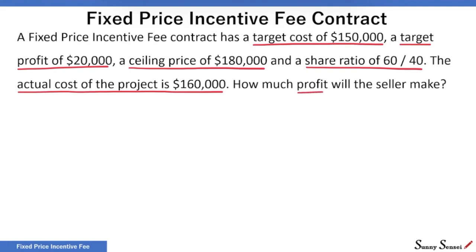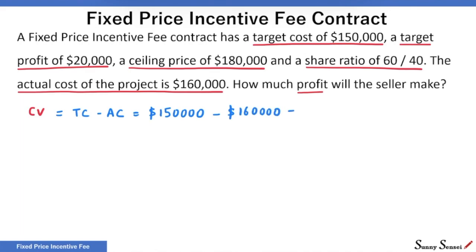It is always best to start with the cost variance. The cost variance tells us how much the actual cost differs from the target cost. Mathematically, cost variance or CV is simply target cost minus the actual cost. Our target cost is $150,000 and the actual cost is $160,000, so the cost variance is minus $10,000.